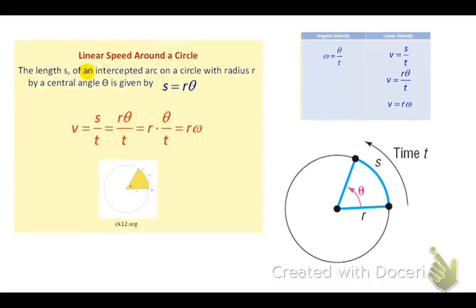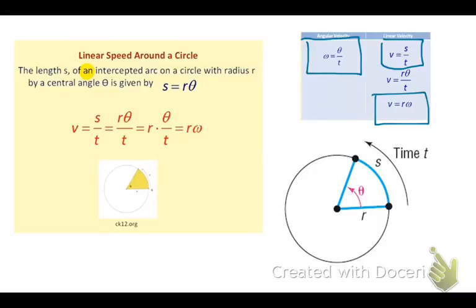So your angular velocity is kind of that little small w, italics w, is your angle, your theta, divided by the time. And then your linear velocity is your intercepted arc divided by time, which we can rewrite and make it easier to work with by taking whatever the radius is and multiplying it by that angular velocity. But you have to find the angular velocity in order to do that.